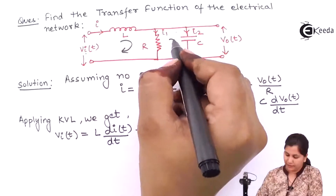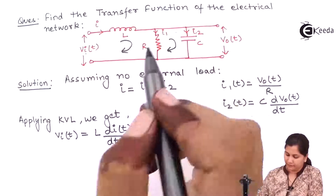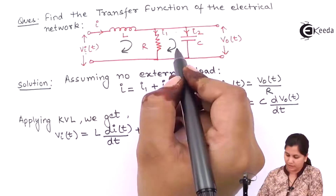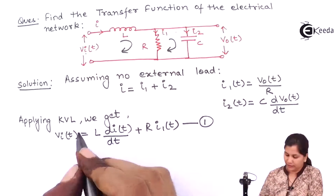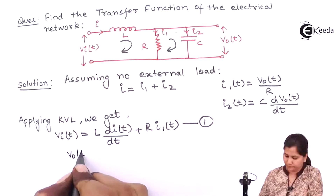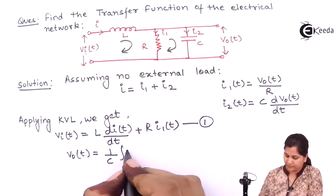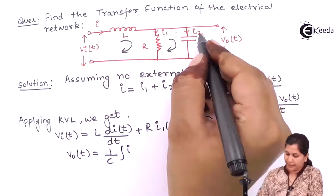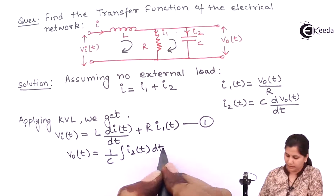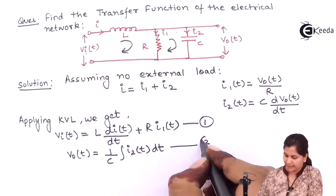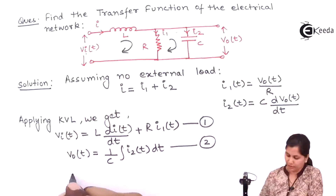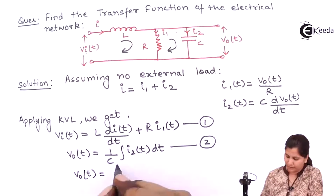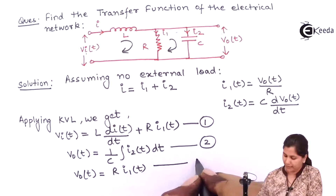Now if we apply KVL in the second loop, we will get the value of V0(t). V0(t) is the voltage across the capacitor, so V0(t) will be equal to 1/C times the integral of I2(t) dt. Number this as the second equation. From this, we have that the voltage across the resistance is V0(t), so another value of V0(t) is R·I1(t). Number this as the third equation.